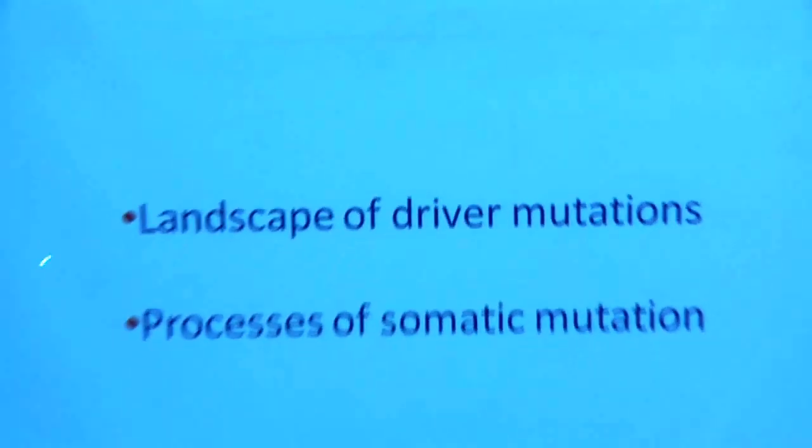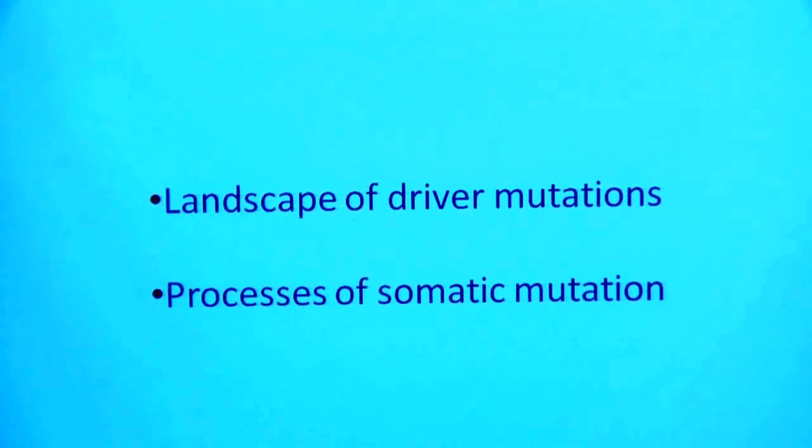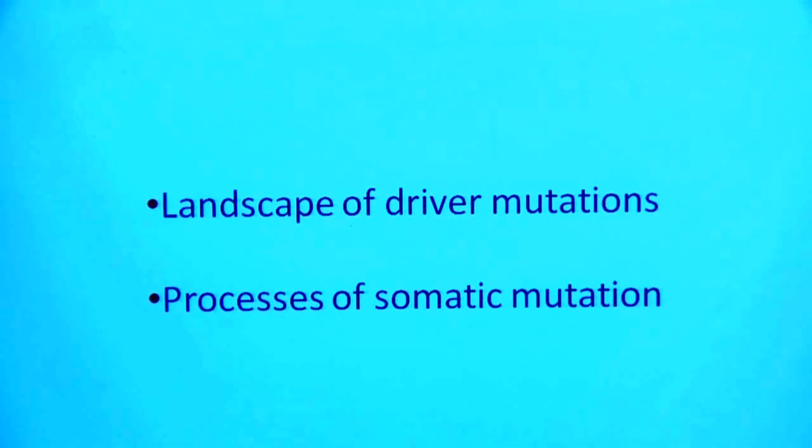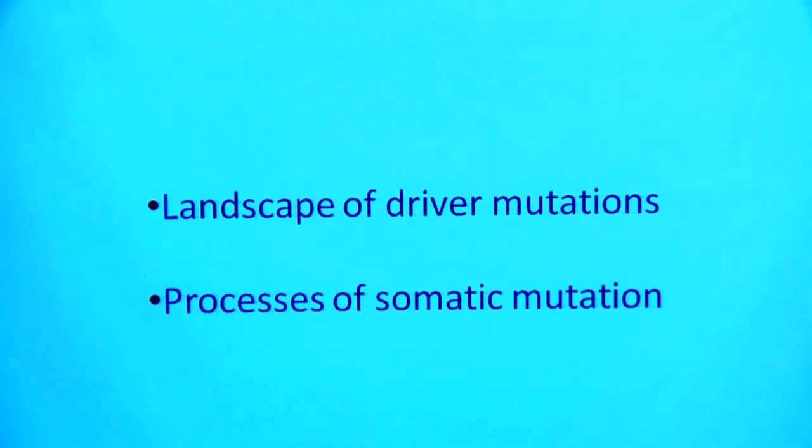As I'll show you in a moment, many of the genes being discovered by systematic sequencing of cancer genomes are in fact in the recessive category. I'm going to present to you today studies — all of which are unpublished, although I expect they will be in the next two or three weeks — that illustrate how we can use systematic sequencing of cancer genomes to explore two points: firstly, what is the landscape of driver mutations in cancer, and secondly, what are the processes of somatic mutation that have been operative. I'm going to use breast cancer as an example.